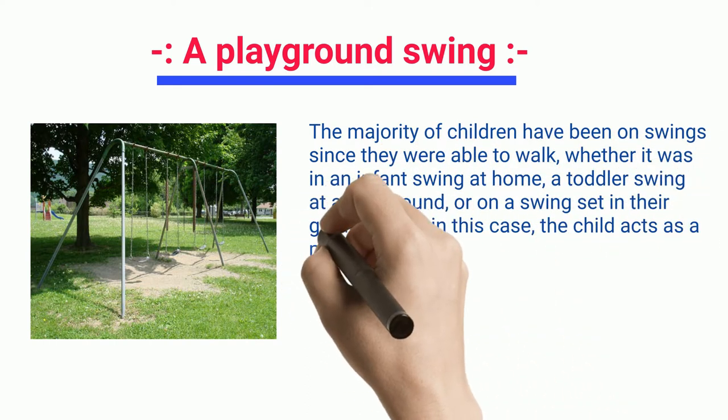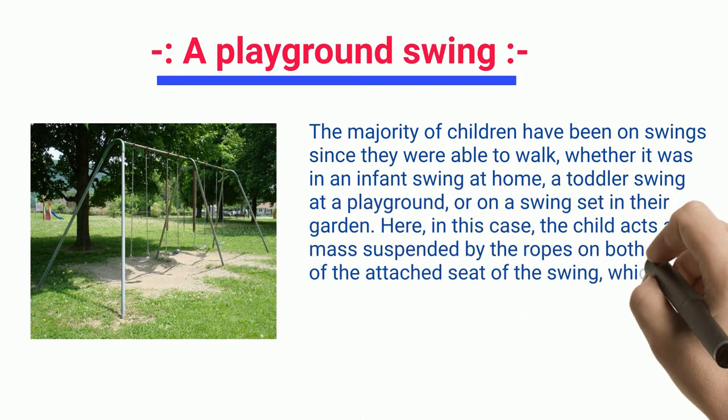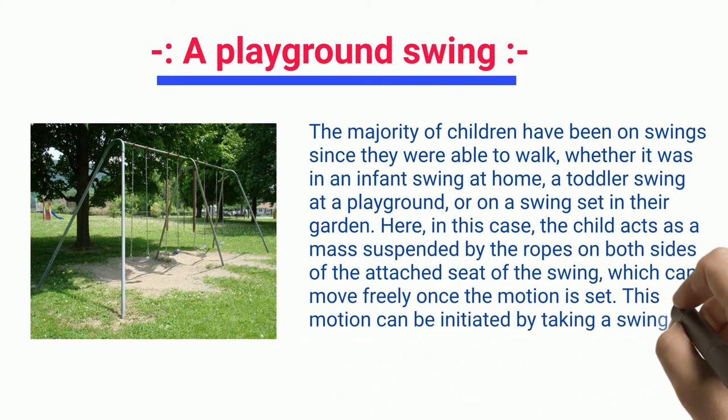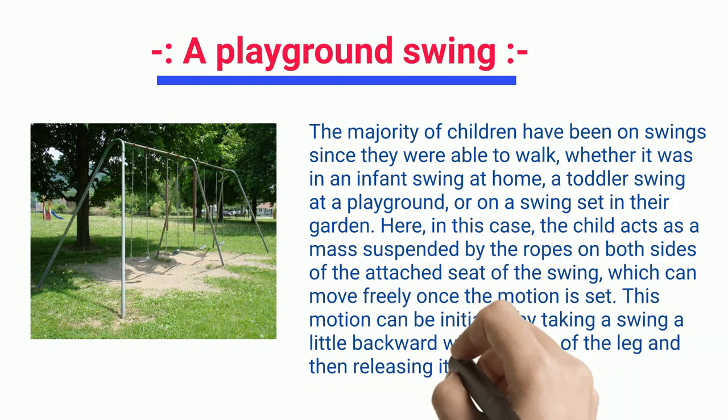Here, the child acts as a mass suspended by the ropes on both sides of the attached seat of the swing which can move freely. Once the motion is set, this motion can be initiated by taking the swing a little backward with the help of the leg and then releasing it.